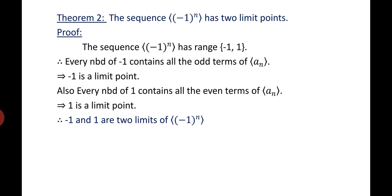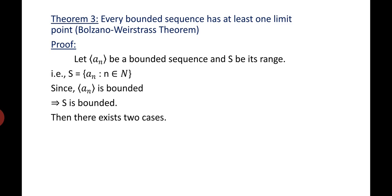Therefore, -1 and +1 are the two limit points of the sequence (-1)^N. The third theorem is very important, known as the Bolzano-Weierstrass theorem. The statement says: every bounded sequence has at least one limit point.